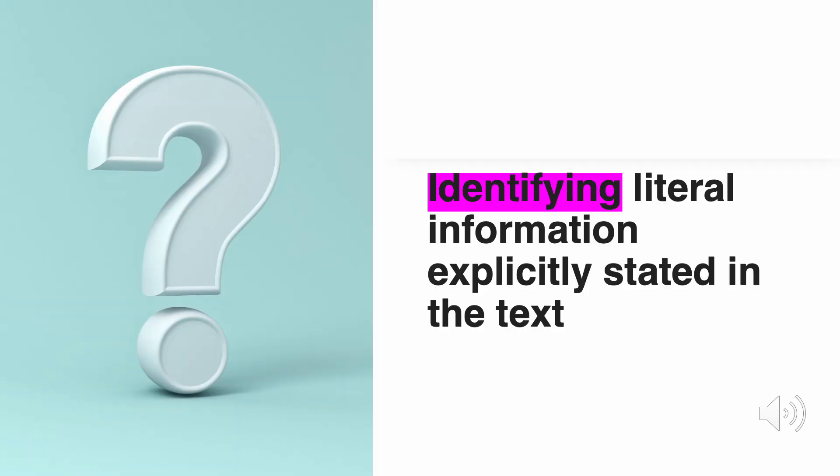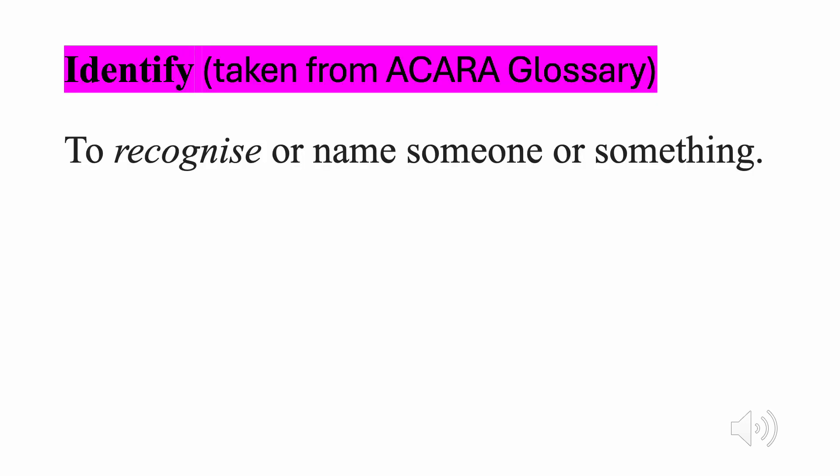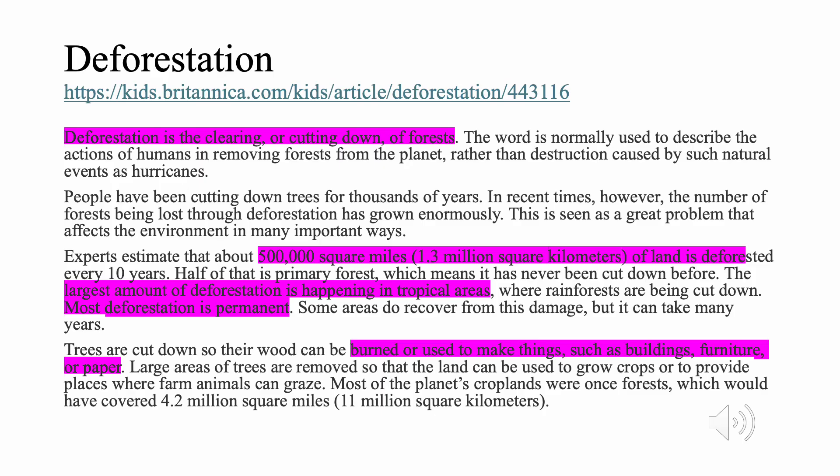The third strategy is identifying literal information explicitly stated in the text. The cognitive verb of identify, which is taken from the ACARA glossary, is to recognise or name someone or something. This is the lowest level skill in the Australian Curriculum. The teacher might read aloud information on deforestation to the students, the students might read it themselves, or the students might have an immersive reader on their laptop read it to them. Then, whilst they engage with the text, they highlight in pink any time they come across literal information.